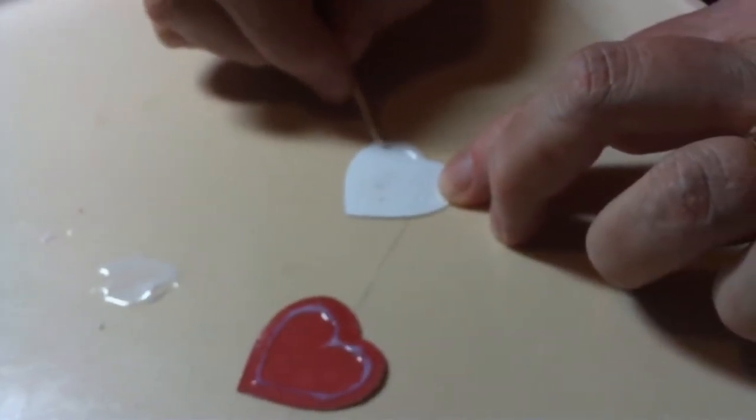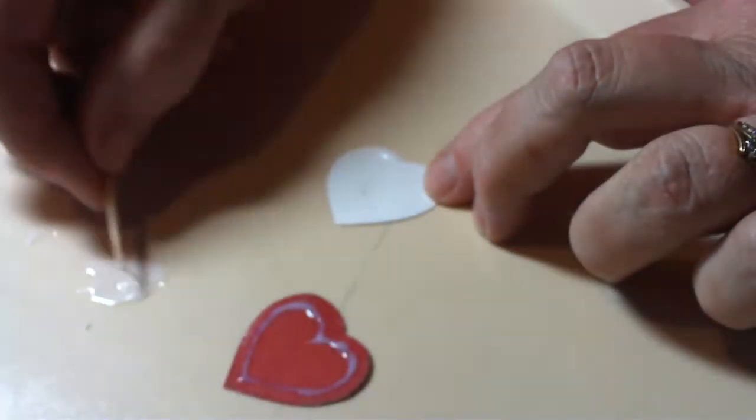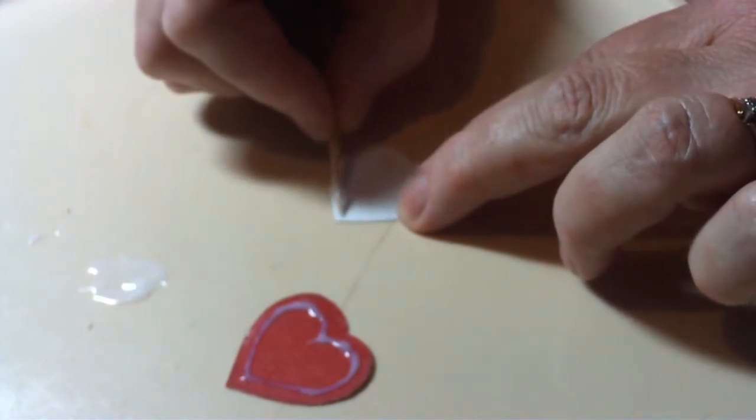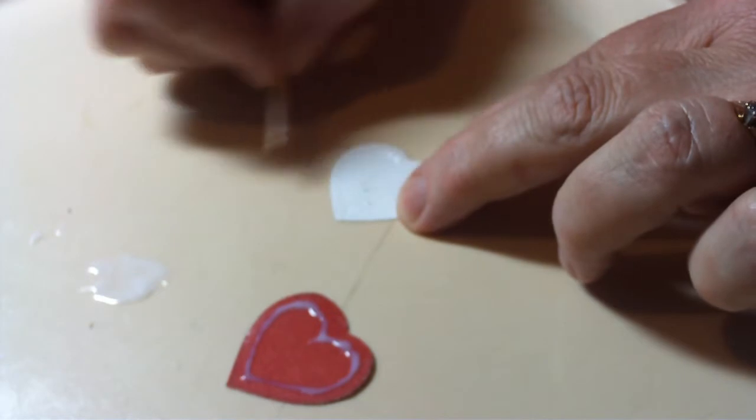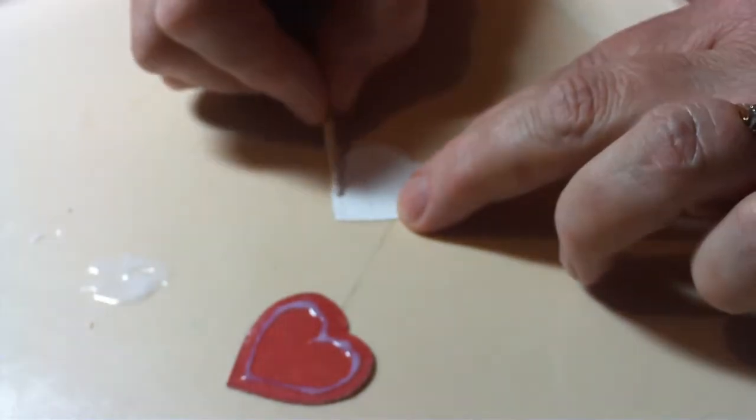Using a toothpick, apply a line of glue to the top and bottom of the box. On the top, keep it very close to the edge. On the bottom, apply the glue about 1/8 inch from the edge. This is so the two hearts will fit together.